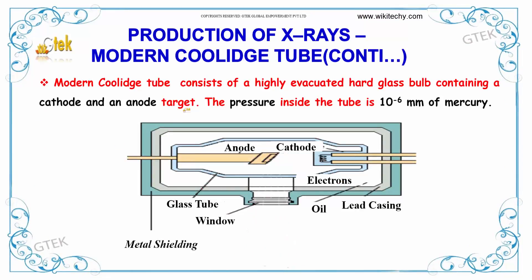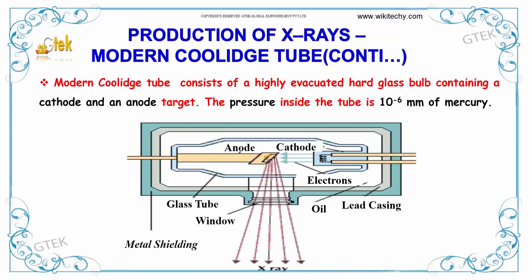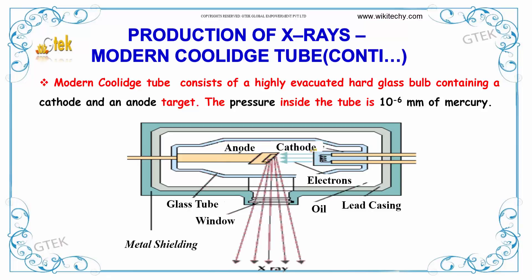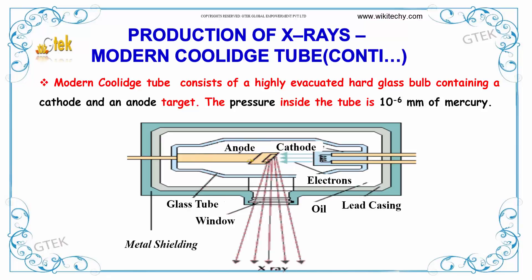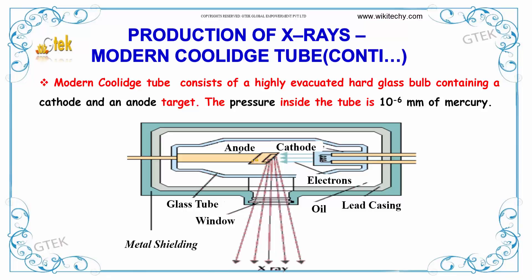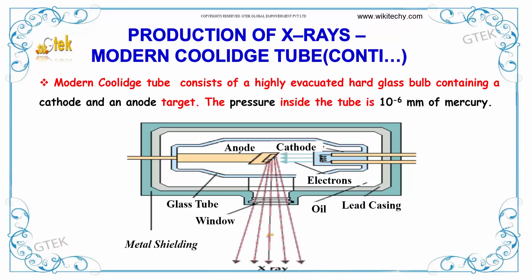This modern Coolidge tube consists of a highly evacuated hard glass bulb containing a cathode and anode target. The pressure inside the tube is 10⁻⁶ mm of mercury. The cathode emits electrons which strike the anode, and X-rays are produced.